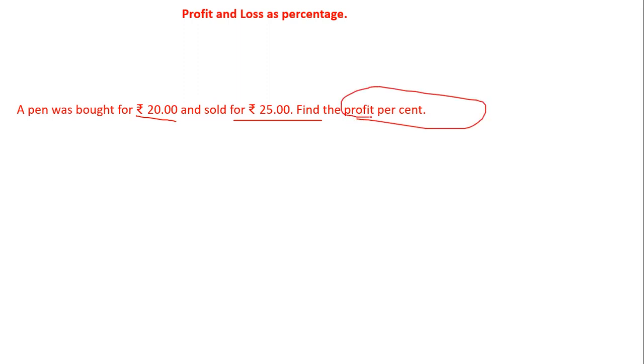After reading this question, we will come to know that we need to calculate the profit percentage. Given: cost price of a pen is rupees 20, selling price of a pen is rupees 25.